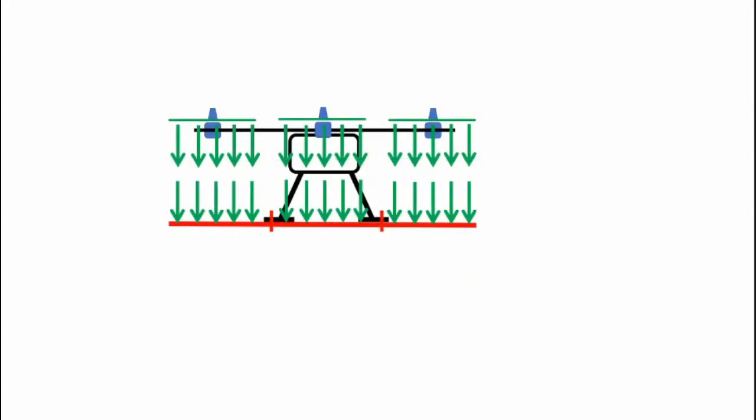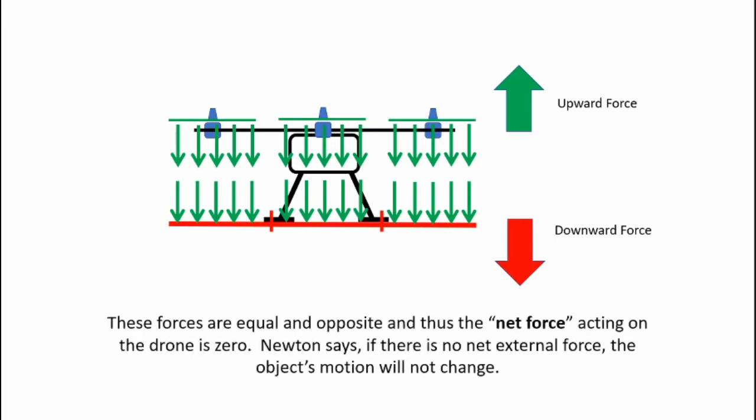So what's happening? Well we've got the upward force being generated by the propeller system. We also have a downward force of the momentum transferring back into the reaction plate and into the drone. So those forces are equal and opposite and thus the net force acting on the drone is zero. Now Newton says if there's no net external force acting on a body that body's motion will not change. So if the drone's sitting on the ground not moving and if the upward force is equal and opposite exactly the downward force then the drone will not move. And that's exactly what happened.